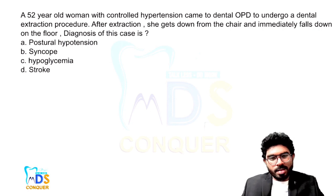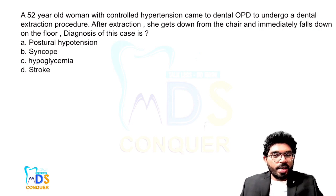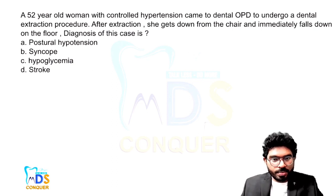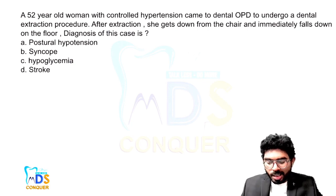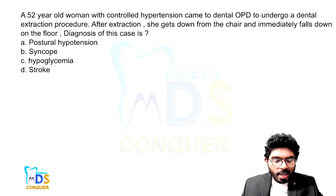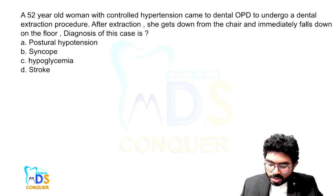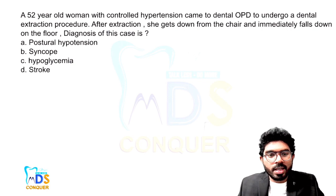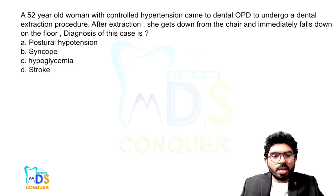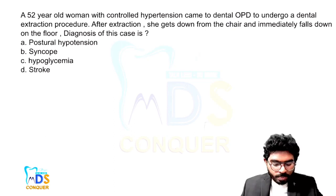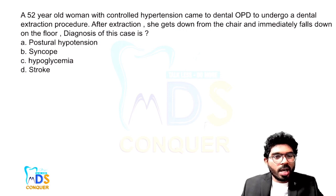This next question is the type given in the NEET examination. A 52-year-old woman with controlled hypertension came to the dental OPD to undergo a dental extraction procedure. After the extraction, she got down from the chair and immediately fell to the floor. The diagnosis of this case — options are: postural hypotension, syncope, hypoglycemia, and stroke.